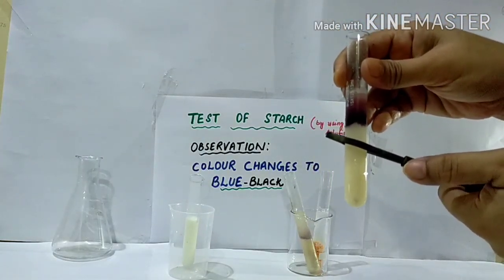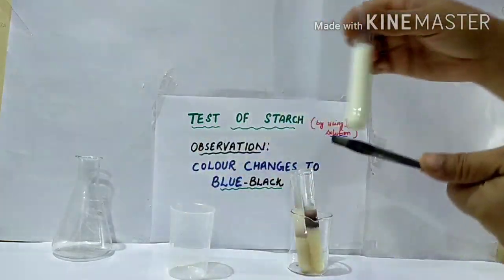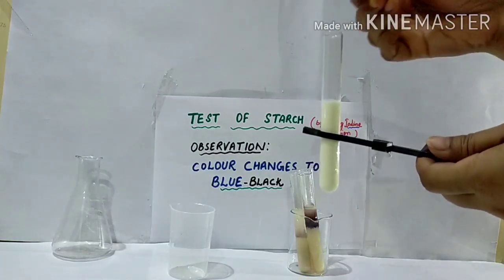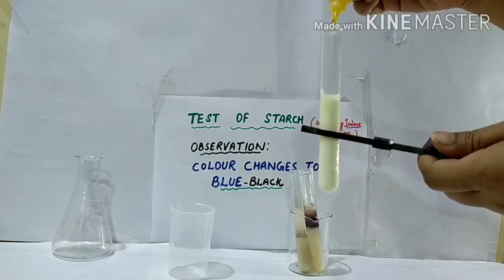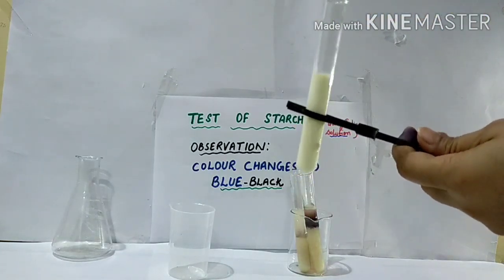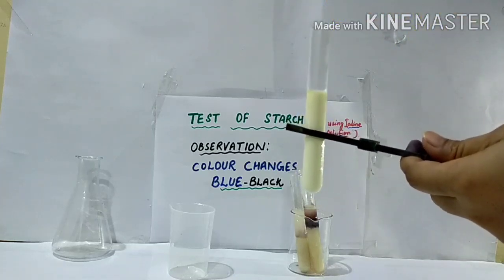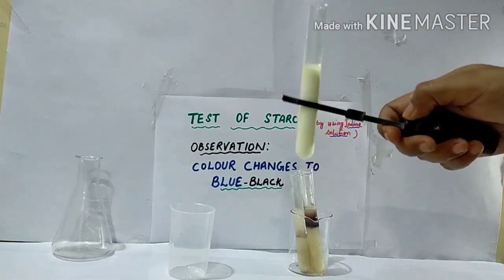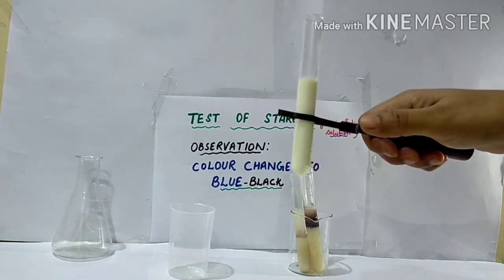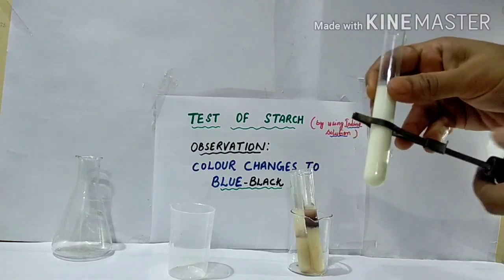The next food item I am taking is milk. I have taken milk. You can see the color of milk does not change. This means that milk does not contain starch — it contains sugar and protein.